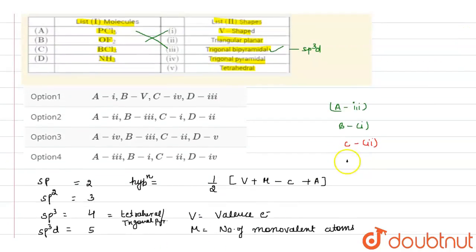So according to that, 4th option matches with D. That means D option matches with 4. So according to that, option number 4 is the correct answer. I hope you understand this question. Thank you very much.